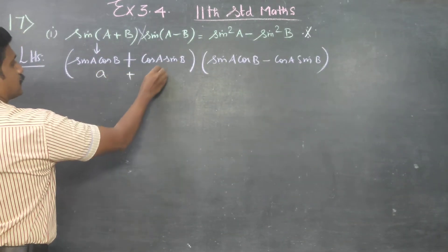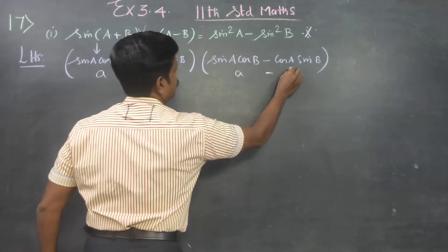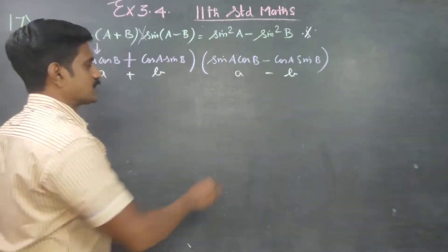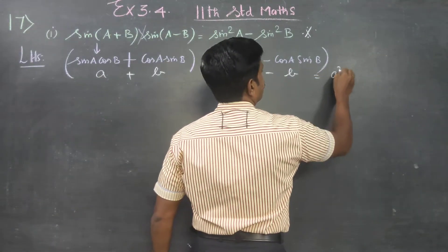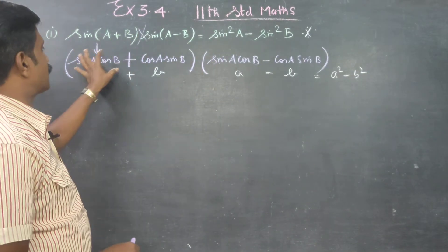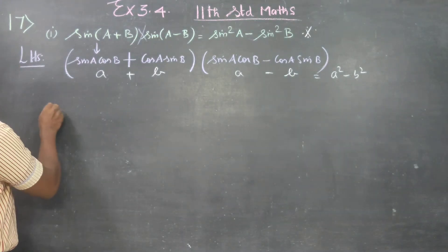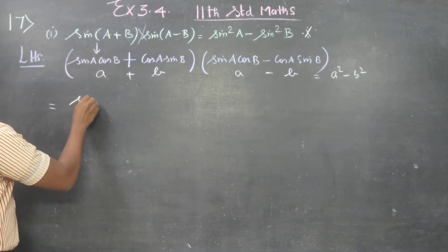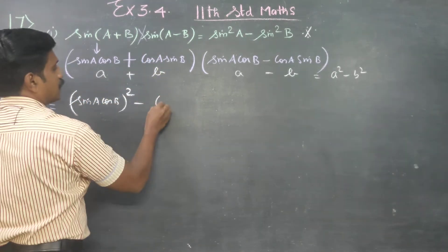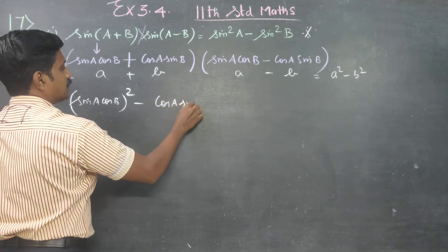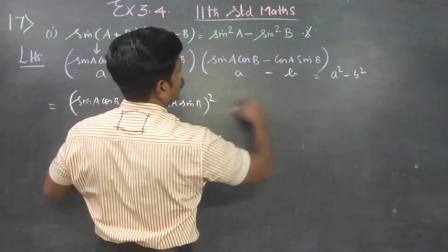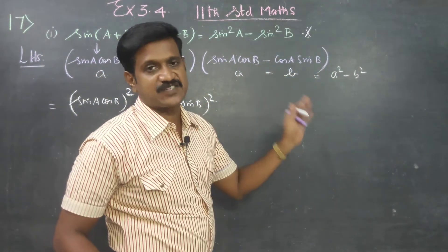Now we have sin(A+B) into sin(A−B). This is something we are going to treat as (A+B) into (A−B). What is our algebra formula? The formula will be A² minus B². Therefore this becomes A² minus B², which is (sinA cosB)² minus (cosA sinB)².